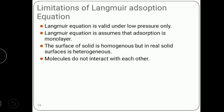Now there are certain limitations in the Langmuir adsorption equation. Langmuir said that adsorption is monolayer, but it is actually multilayer at higher pressure, and the Langmuir equation is valid only at low pressure. Langmuir also said that the surface of the solid is homogeneous, but in real cases surfaces are heterogeneous. Langmuir also said there is no lateral interaction and molecules do not interact with each other, but in real cases molecules interact at the adjacent layer.